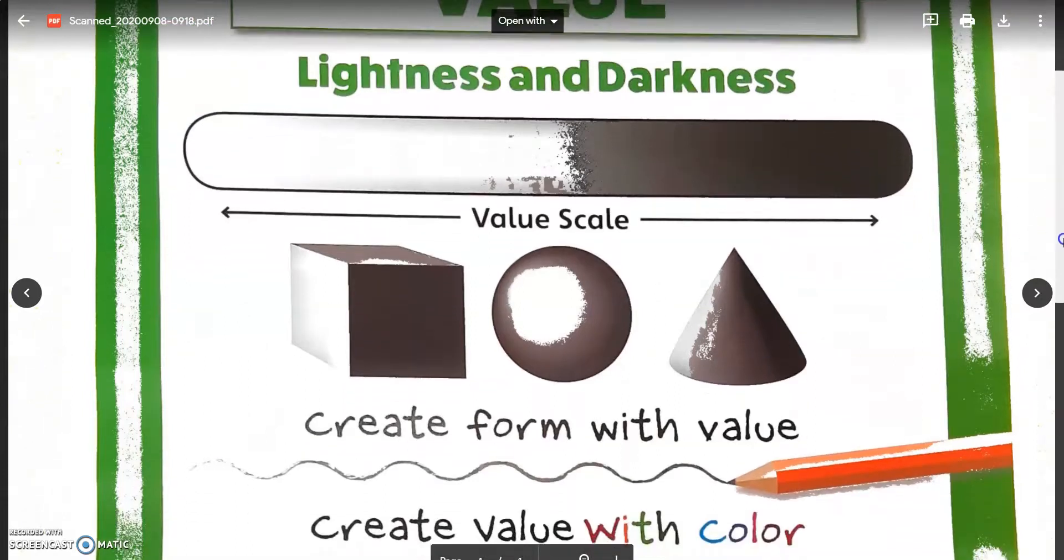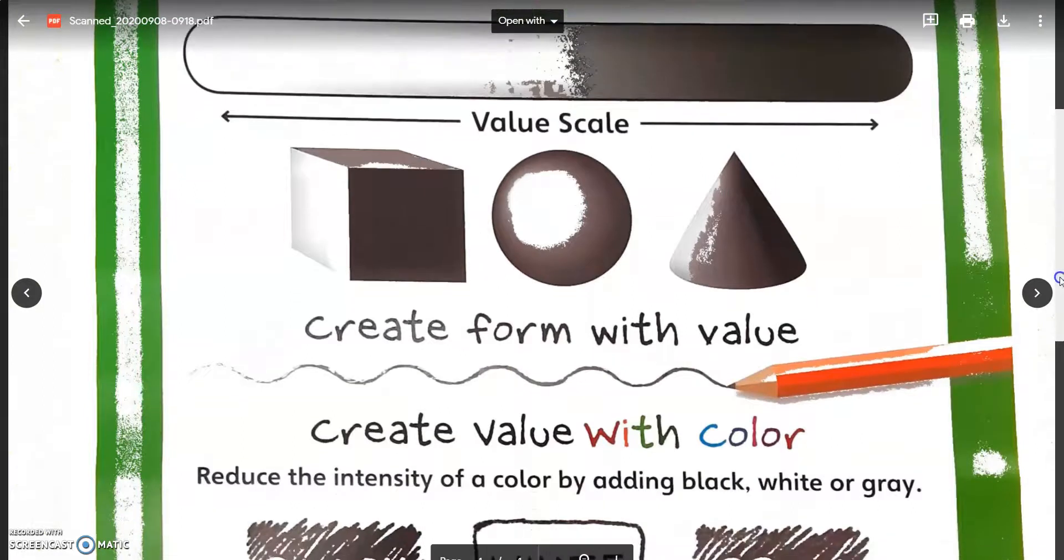Value can be used to create the illusion of three dimensions. You can create form with value. By adding darks and lights to different objects in your artwork, you can make the illusion of three-dimensional form.